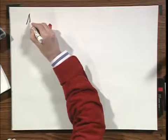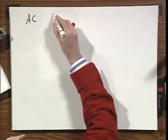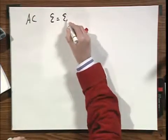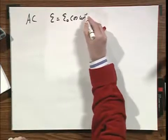Let's now turn to a situation where we drive the circuit with an alternating current. The EMF equals E₀ times cos(ωt).